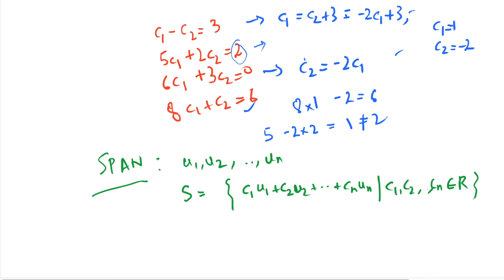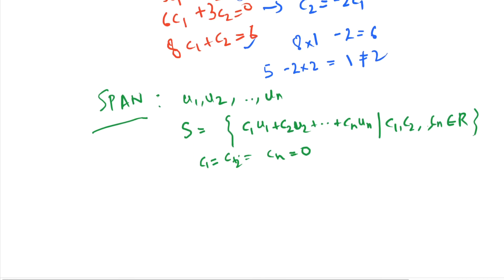And it's easy to see that span will always contain the zero vector, because you can put c1 equal to c2 equal to cn, and you can make all these scalars zero, and what you will get is a zero vector. The span of a single vector, say u,